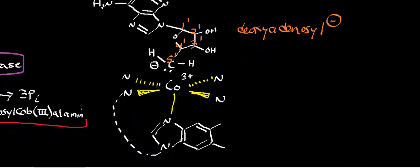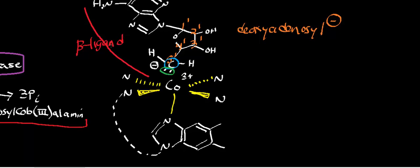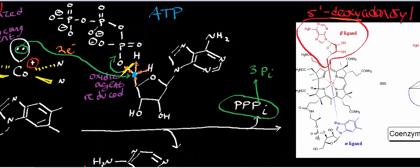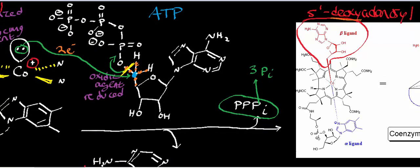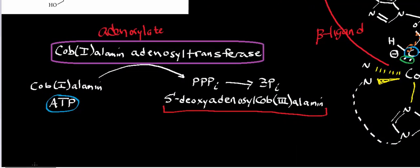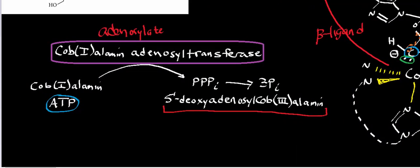Why is cobalt in the three-plus state? We started with cobalt in the one-plus state, and a two-electron transfer moved away from the cobalt onto that carbon highlighted in blue — so the cobalt got oxidized to three-plus. Those two electrons from the cobalt are essentially the lone pair on the deoxyadenosyl anion. This whole group is the beta ligand of the B12 molecule — the beta ligand used in methylmalonyl-CoA mutase. In the next video we'll go over that enzyme's mechanism, but I wanted to show you the synthesis of the 5'-deoxyadenosyl group from ATP by cobalamin adenosyl transferase.